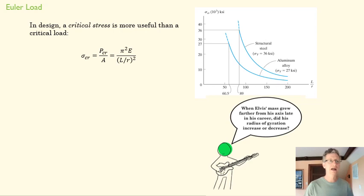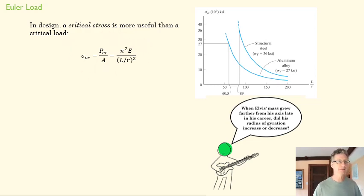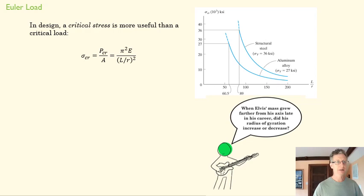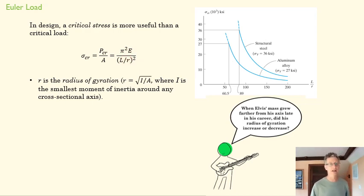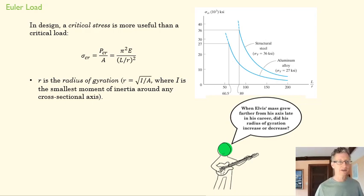In design, a critical stress is more useful than a critical load, so we divide by A. When we do that, the form changes and has a couple of different terms we need to understand. The first is R — the radius of gyration — defined as a function of area and moment of inertia.